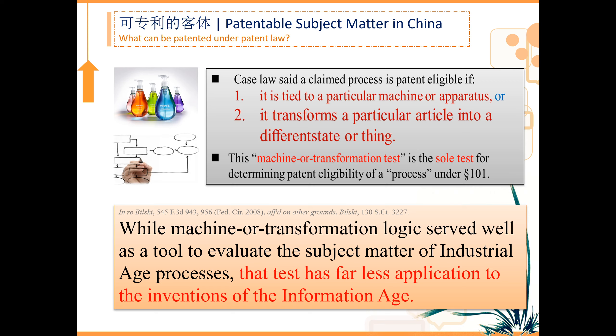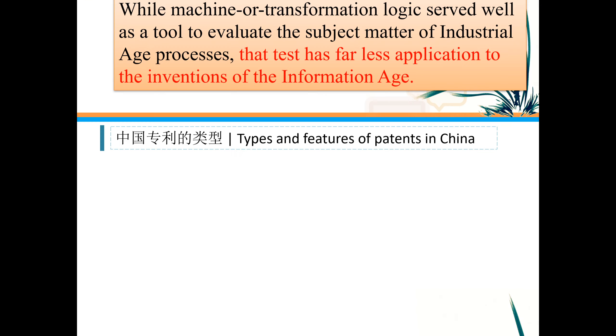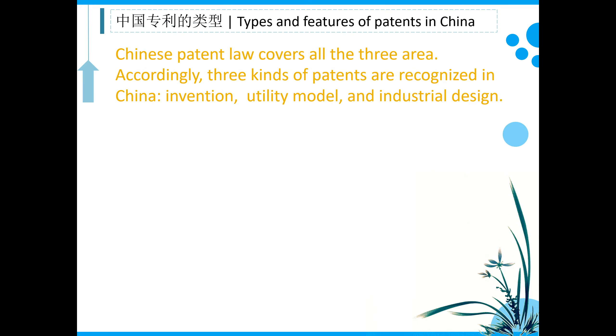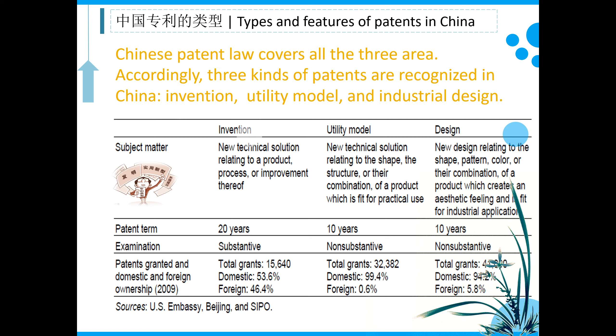Under patent law today, the most challenging topic is the scope of patentable subject matter — in particular, what is a patentable process or method, because it involves abstract ideas. How abstract is too abstract to be patentable? In China, as mentioned earlier, the patent law covers three areas: inventions, utility models, and designs — all under one single patent law of China.